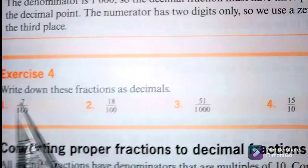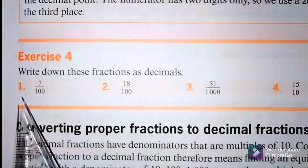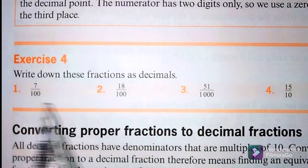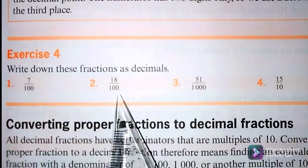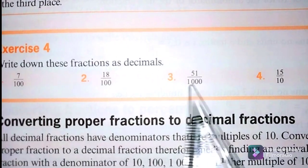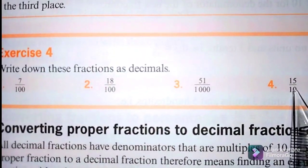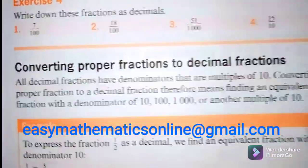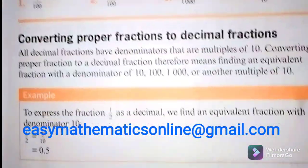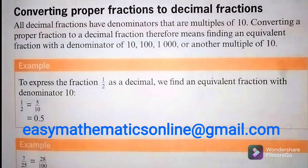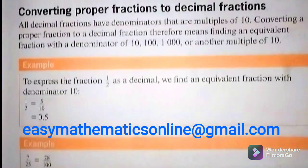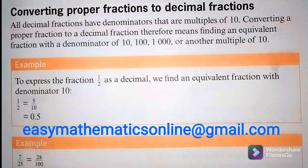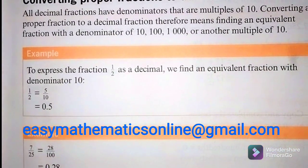Here are some exercises: Write down these fractions as decimals — Number 1: 7 over 100; Number 2: 18 over 100; Number 3: 51 over 1000; Number 4: 15 over 10. Remember to send your answers to our email easymatchonline@gmail.com or write the answers in the comment section.